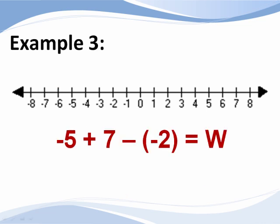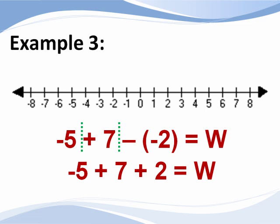One more for demonstration purposes. What is negative 5 plus 7 minus a negative 2? Again, let's consider the elements rather than the problem as a whole. We are really looking at combining negative 5, positive 7, and a positive 2. Because remember that 2 negatives is equal to a positive.